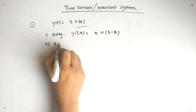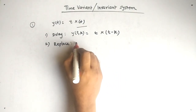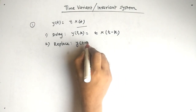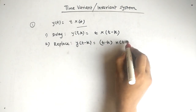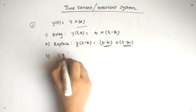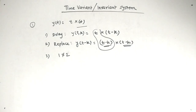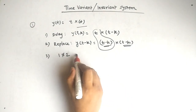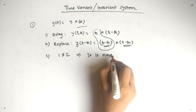The second step is replace: wherever you see t, replace it by t minus k. So replacing gives (t − k) · x(t − k). You can see that step one gives t · x(t − k) while step two gives (t − k) · x(t − k). These terms are different, so one is not equal to two.